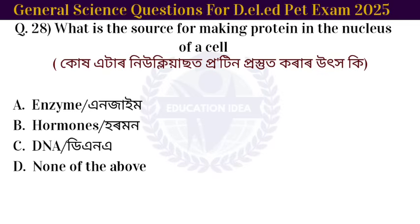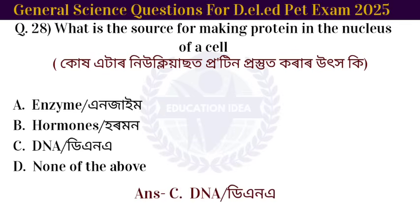Next question: what is the source for making protein in the nucleus of a cell? The answer is DNA.